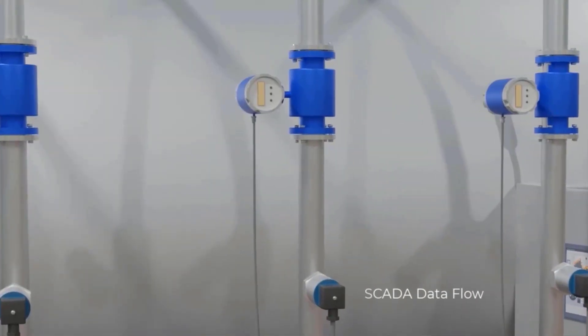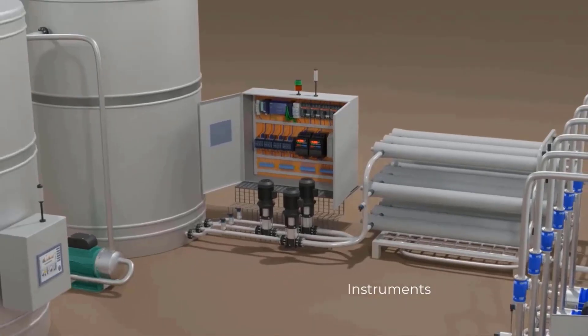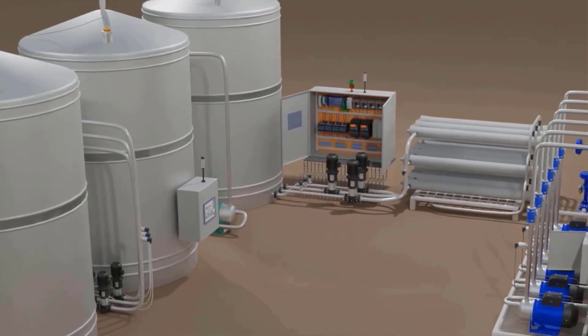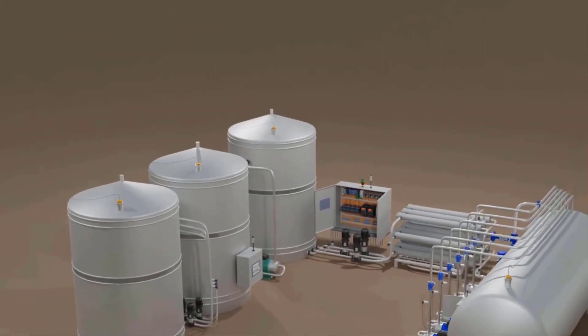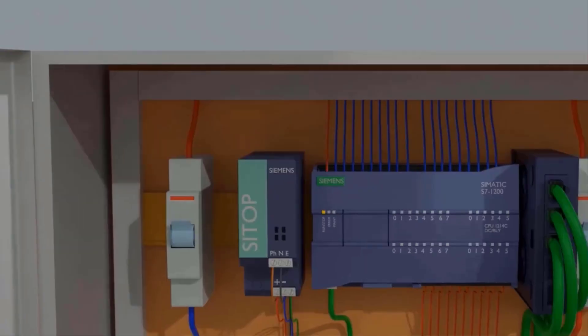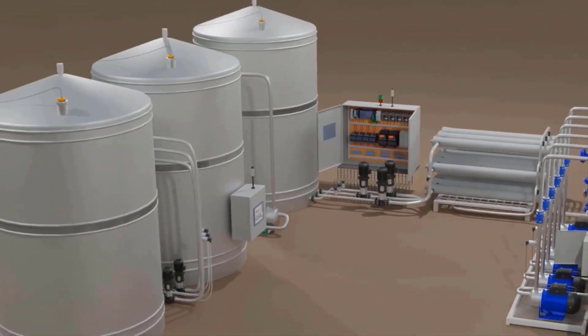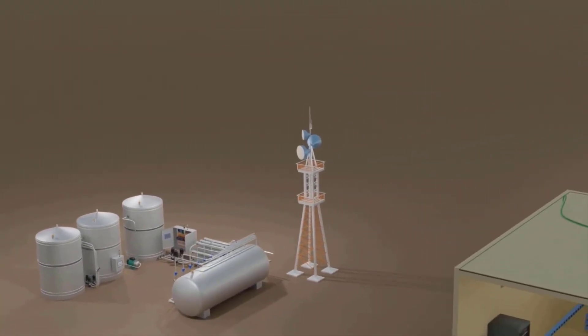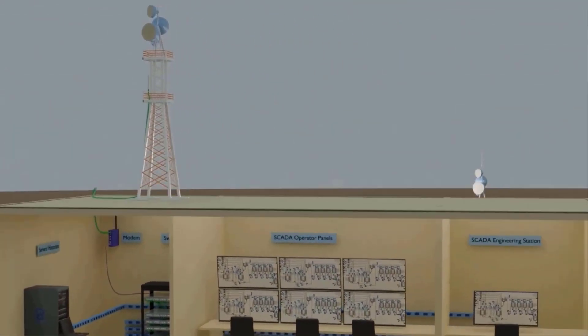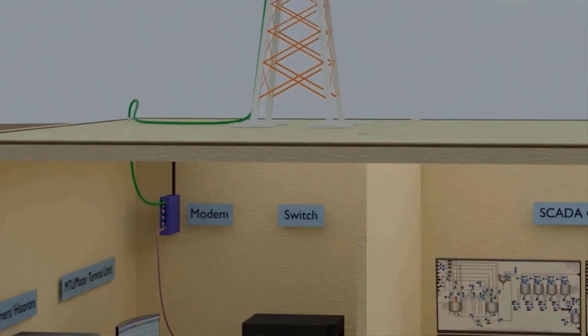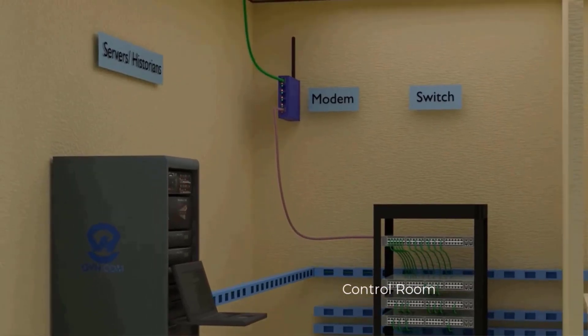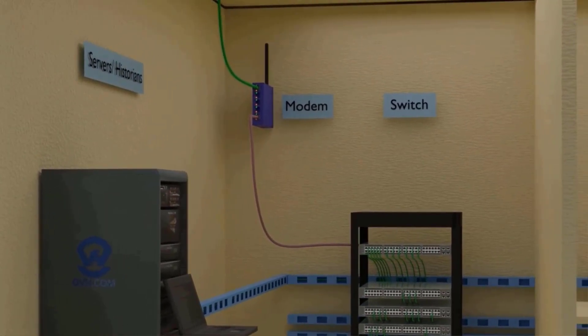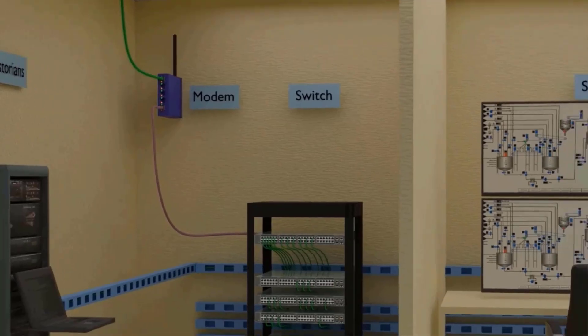What is SCADA? SCADA, or Supervisory Control and Data Acquisition, is a system used to monitor and control industrial processes. It collects real-time data from devices like Programmable Logic Controllers, or PLCs, and various sensors. Additionally, it gathers information from remote terminal units known as RTUs. This data is then presented visually on interfaces, allowing operators to supervise and make informed decisions. SCADA systems are crucial for ensuring the efficiency and safety of industrial operations.